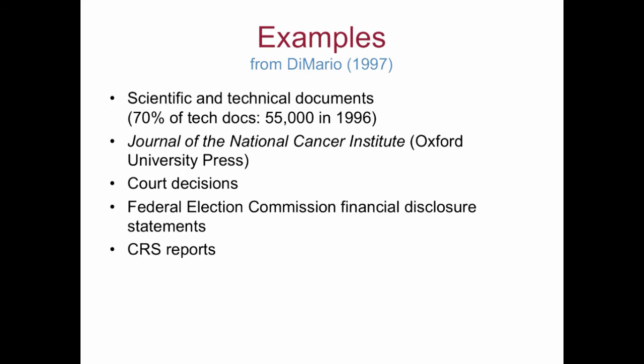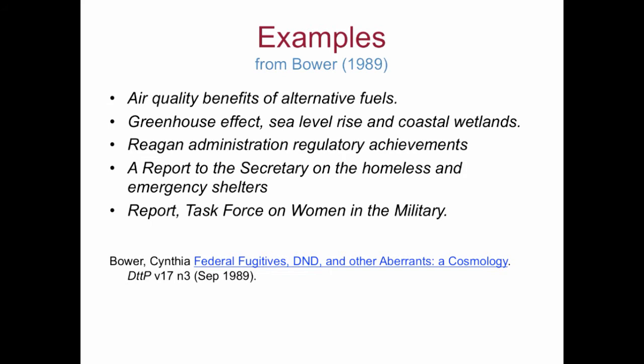Here are some examples of fugitives that DeMario gave in his 1997 testimony. You can see things like technical documents — 70% of technical documents which should have been in FDLP in 1996 were not in FDLP. Here's an example of a journal that became privatized, court decisions, Federal Election Commission statements, CRS reports, and so on.